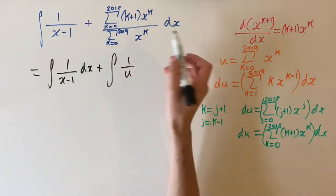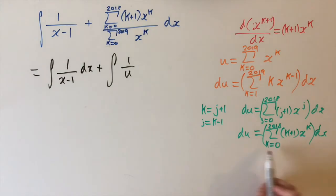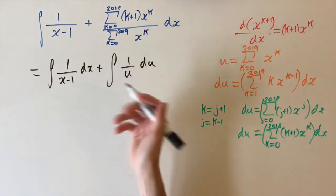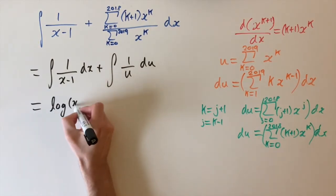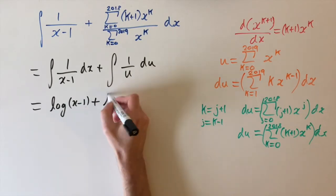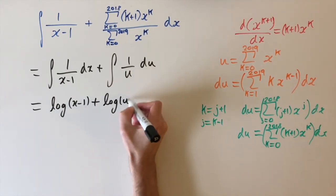times replacing the numerator and the dx by du, which is really simple. And then we can actually evaluate both of these. It's going to be log of x minus 1 plus log of u plus c.